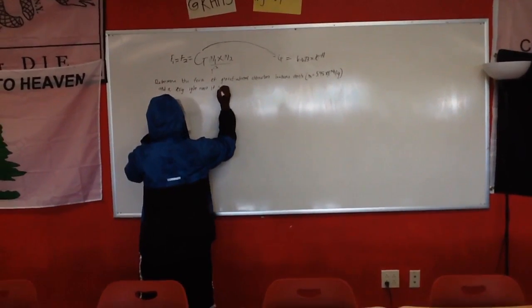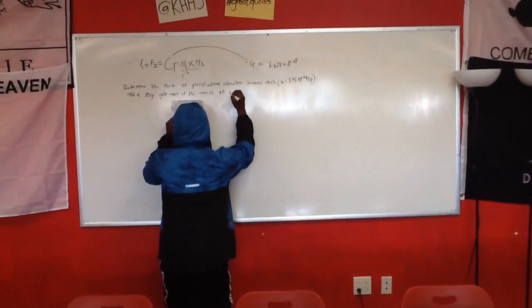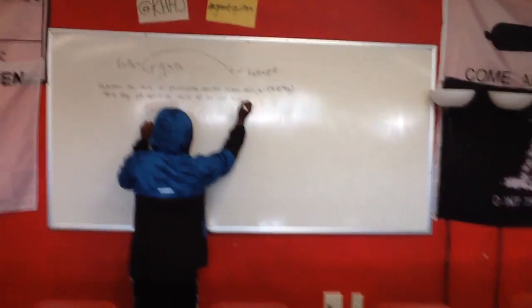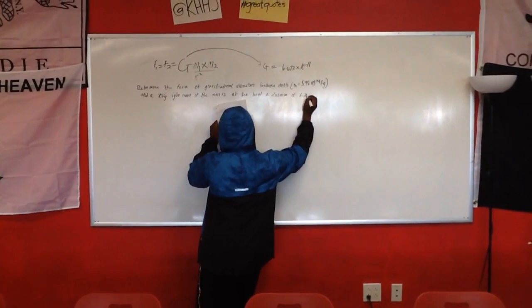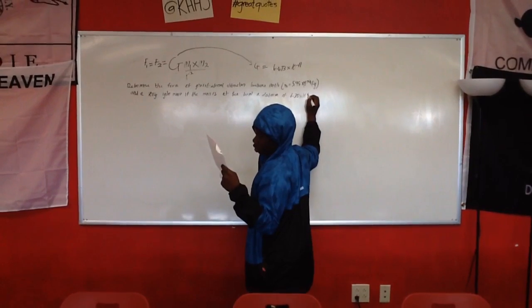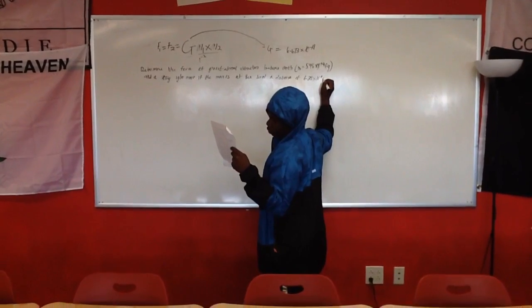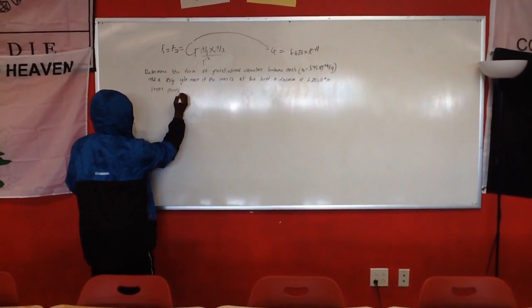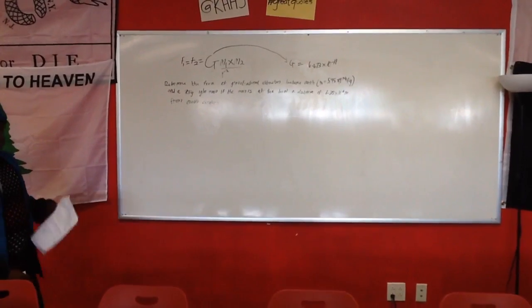If the man is standing at sea level, a distance of 6.38 times... I'm sorry, now we'll solve this.